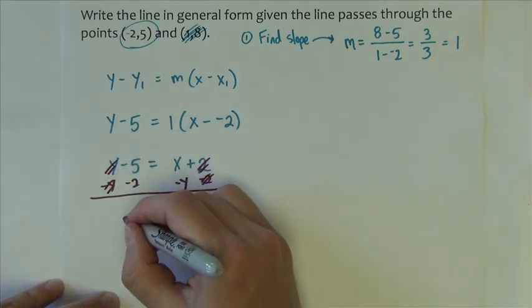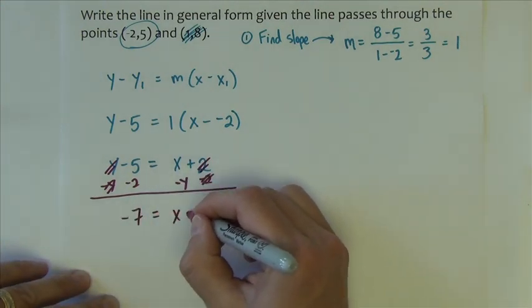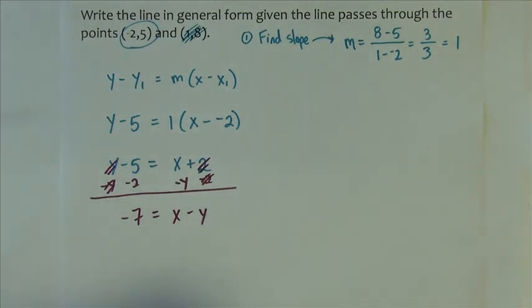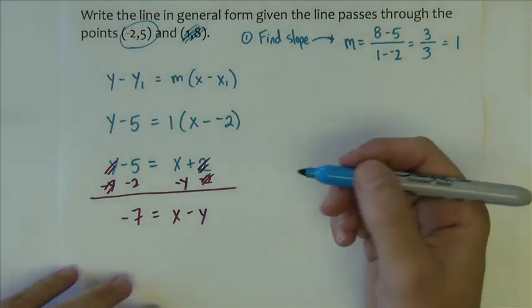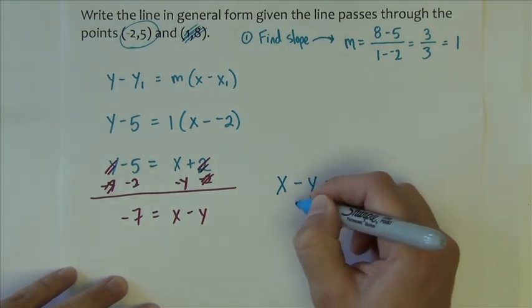So 2's cancel, y's cancel, we get negative 7 equals x minus y. If you'd like to rewrite it so the variables are on the left, it would be x minus y equals negative 7.